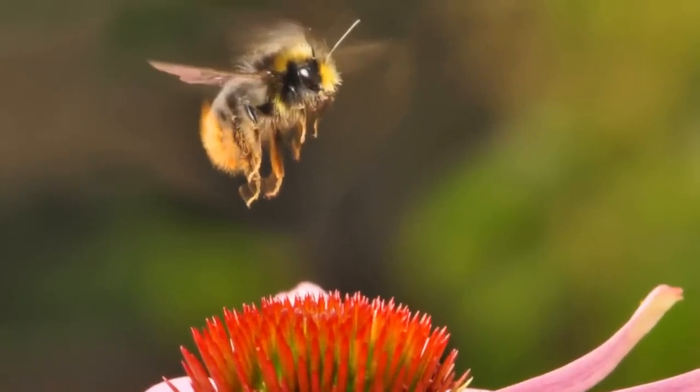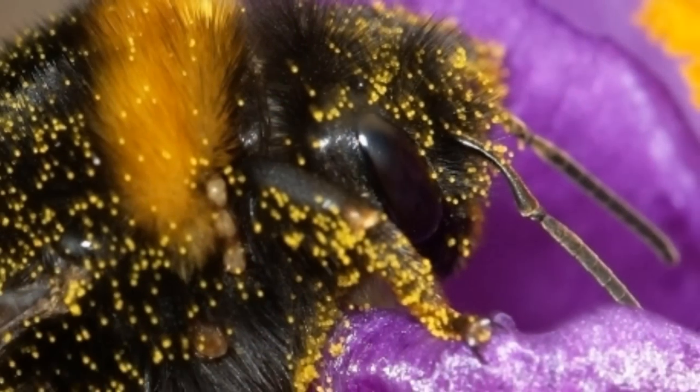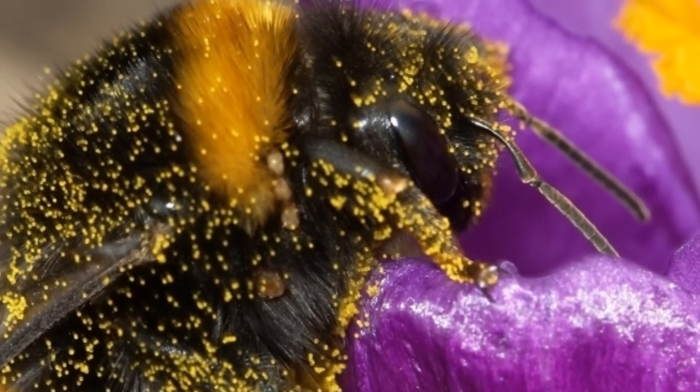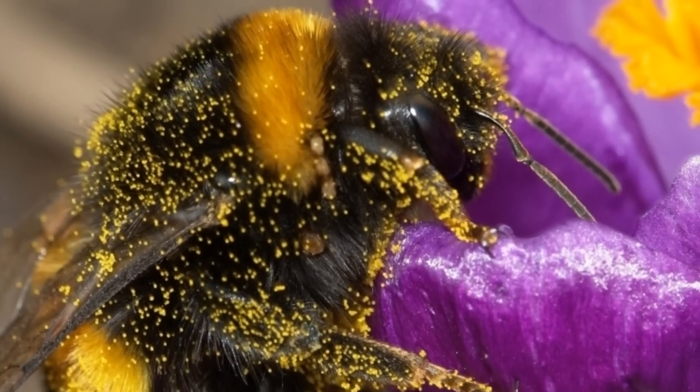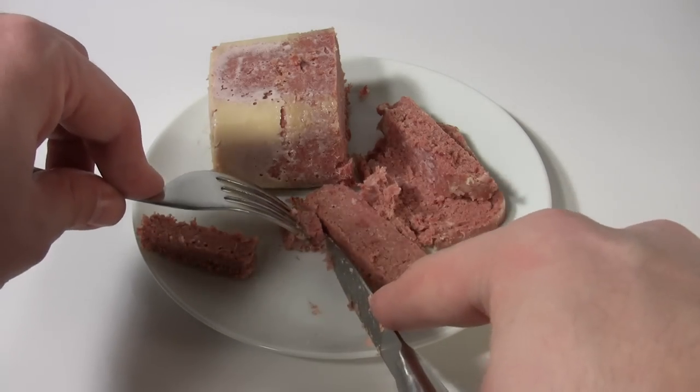Of course, using bees and flowers to power a machine is absurd. For one thing, bumblebees are a protected species and it can also be hard to get fresh flowers all year round. So instead of the flower, we use a piece of corned beef.